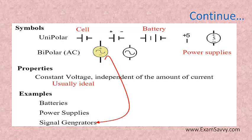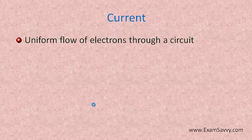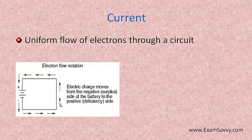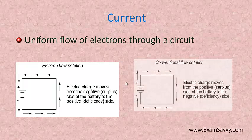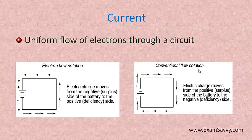Examples for voltage include battery, power supply, and signal generator. Current is nothing but a flow of electrons in a circuit — a uniform flow of electrons. In the electron flow notation, the electric charge moves from the negative side of the battery towards the positive side. The opposite of this is conventional flow notation, where current flows from the positive side towards the negative side.